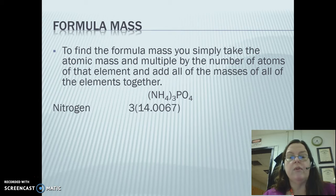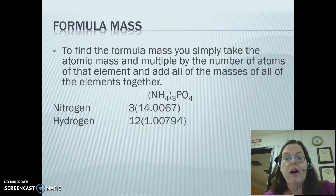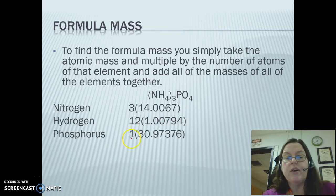When we look at formula mass, to find the formula mass, you simply take the atomic mass and multiply it by the number of atoms of that element and add all of the masses of the elements together. Let's go back to our NH₄₃PO₄, ammonium phosphate. We see nitrogen. If we look at our periodic table, nitrogen has 14.0067. Your periodic table may have a slightly different number. I think yours is probably going to have 14.01. This was from an older periodic table. Then we have hydrogen. There are 12 of them. Your periodic table is probably going to have 1.008. Phosphorus, there is only one of them. Here's phosphorus' mass. Oxygen, there are four of them. There's oxygen's mass.